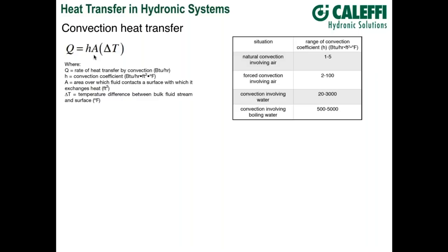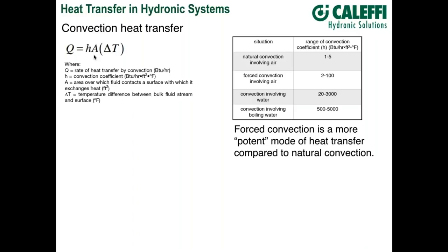The area A is the contact surface between the moving fluid and the solid. The delta T is the temperature difference between what we call the bulk fluid temperature — not the fluid right at the surface, but perhaps two or three centimeters in where conditions are fairly stable. So the equation is simple, but gathering the information needed can be complicated. Forced convection is a much more potent mode of heat transfer.